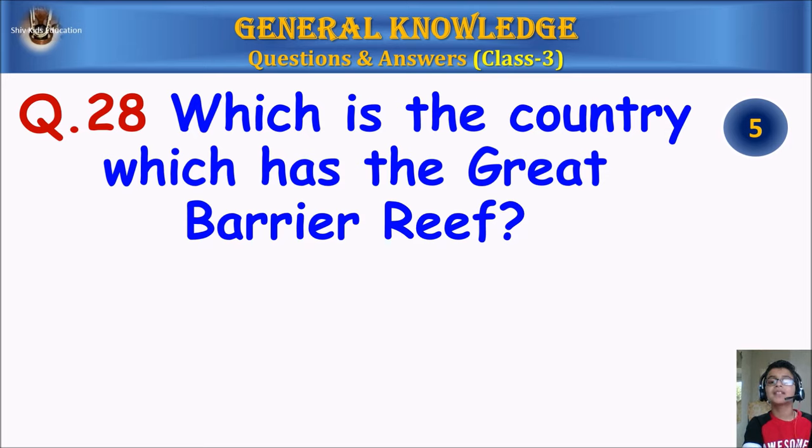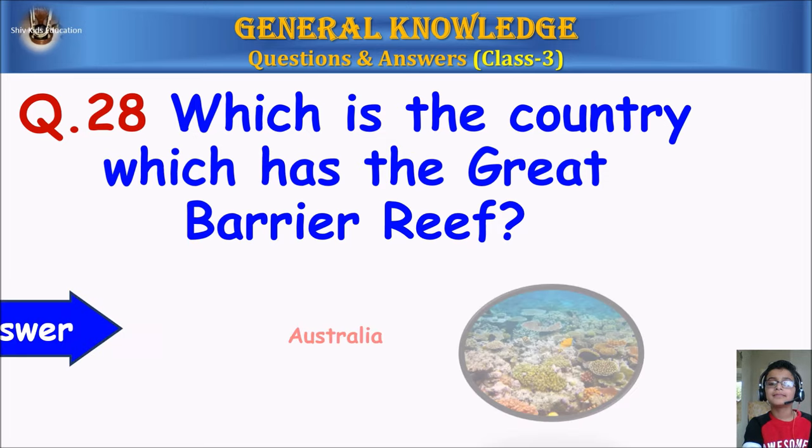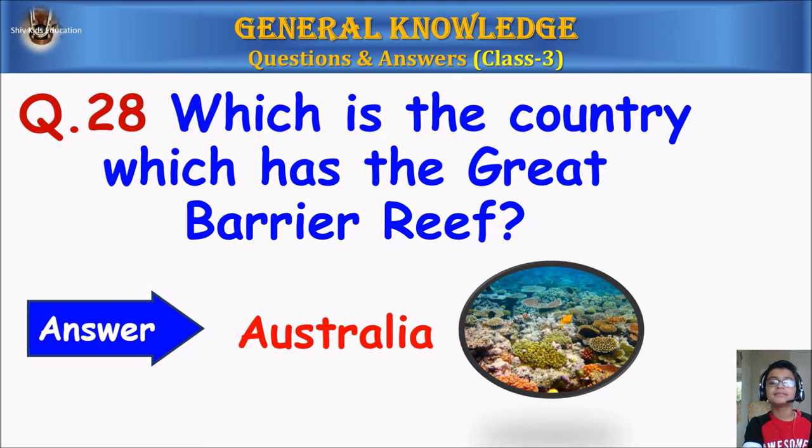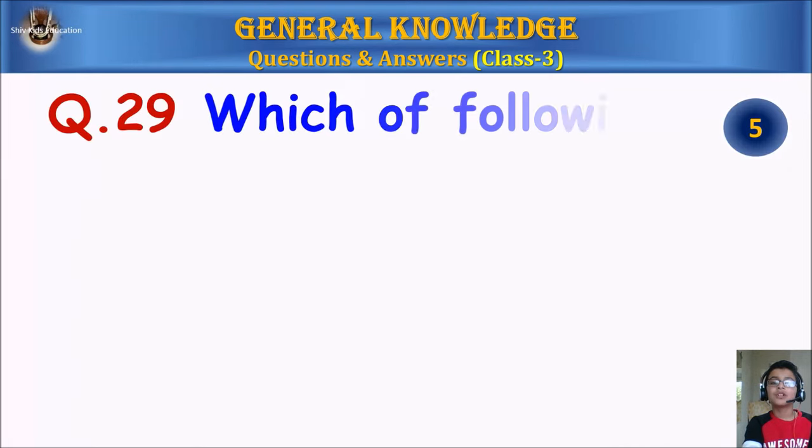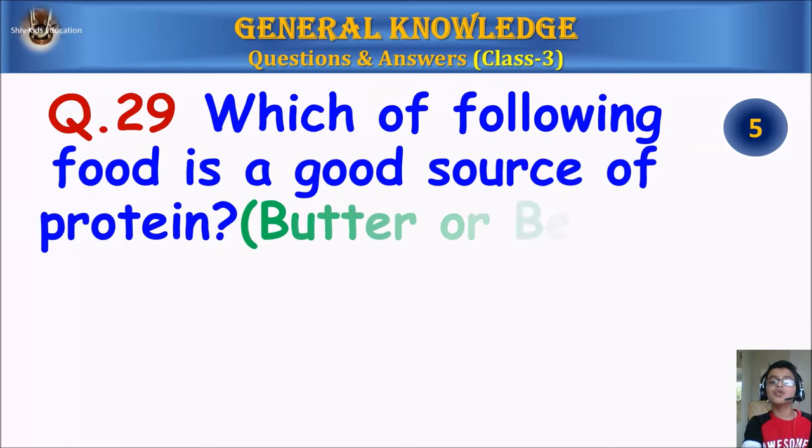Question 28: Which is the country which has the Great Barrier Reef? Your time starts. Answer: Australia. Question 29: Which of the following food is a good source of protein, butter or beans? Your time starts. Answer: Beans.